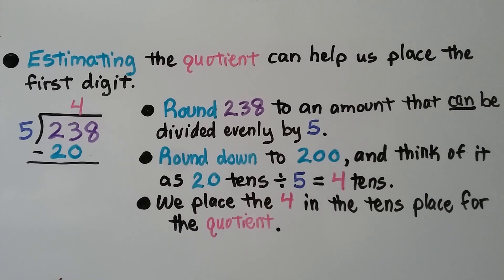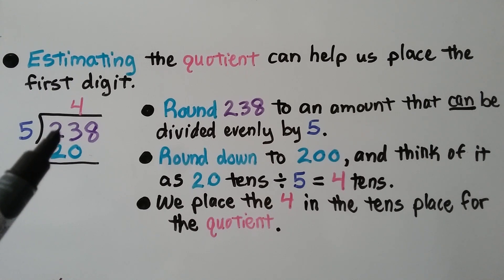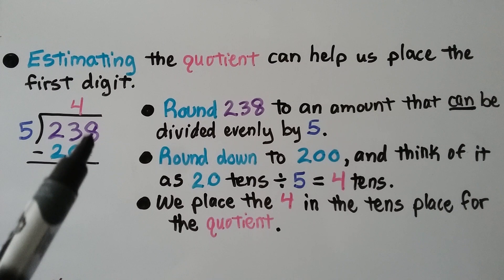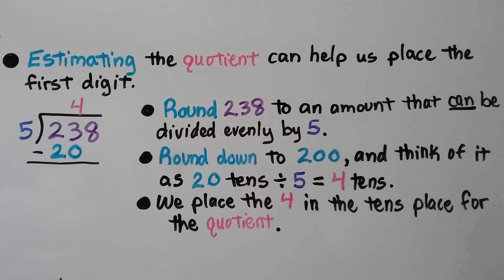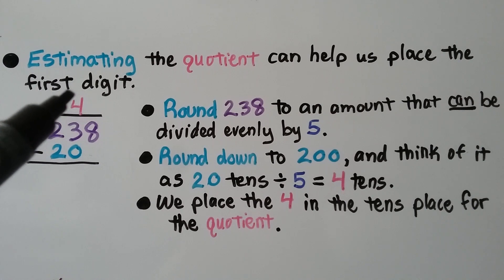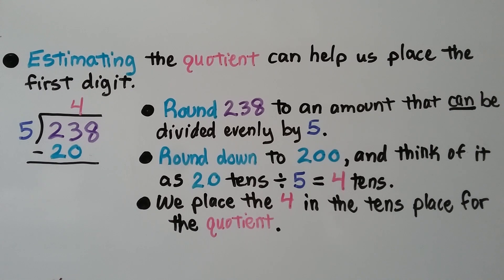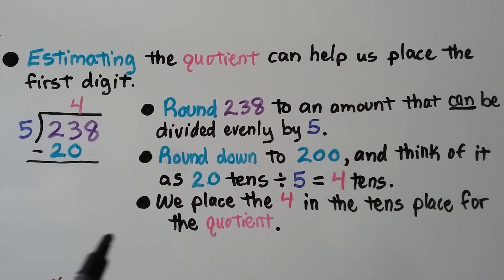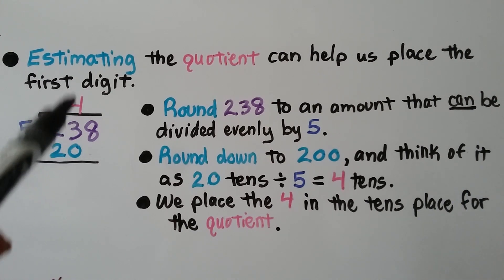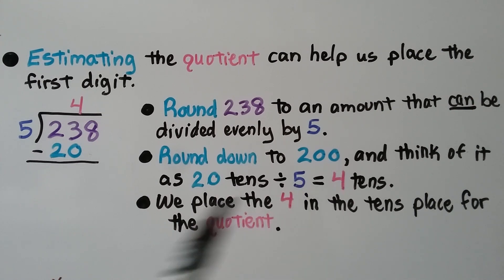Estimating the quotient can help us place the first digit — it can help us even place the last digit. We have 238 divided by 5. We need to round this 238 to an amount that can be evenly divided by 5. We can round down to 200 and think of it as 20 tens divided by 5 is 4 tens. 5 times 4 is 20. We place the 4 in the tens place for the quotient, because 20 tens divided by 5 is 4 tens.